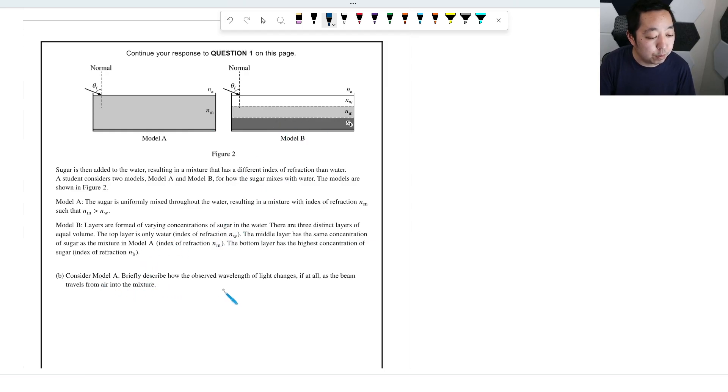Consider Model A briefly describe how the observed wavelength of the light changes. So remember, when we enter a medium, what happens is the speed of light slows down, but the frequency doesn't change. So as it enters from air into the mixture, the speed of light decreases because the index of refraction is greater.